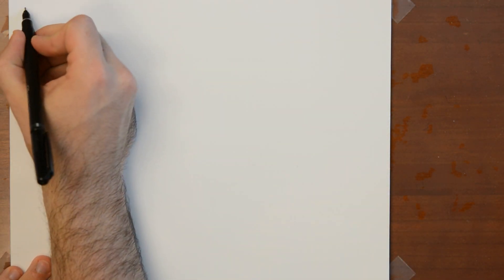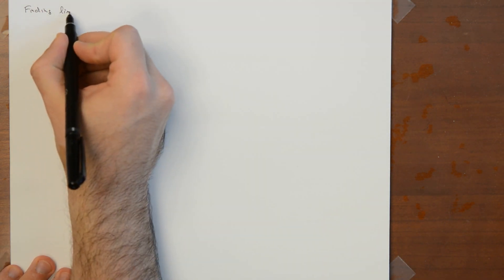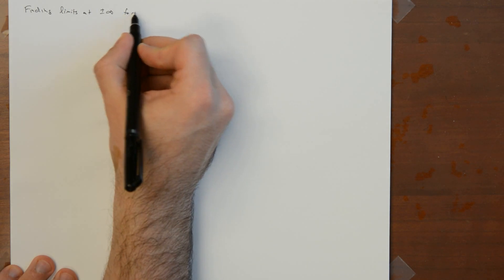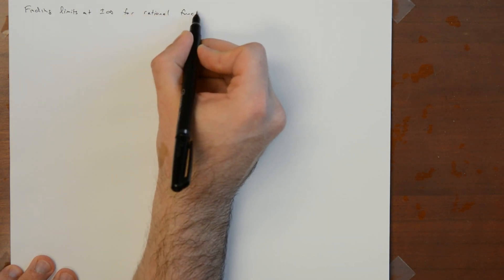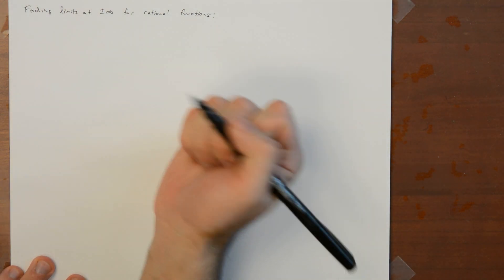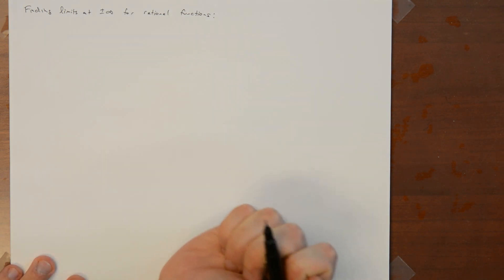Let's talk about how you go about finding limits at positive and negative infinity for rational functions. Limits at positive and negative infinity still satisfy all the usual limit laws, provided everything is finite.